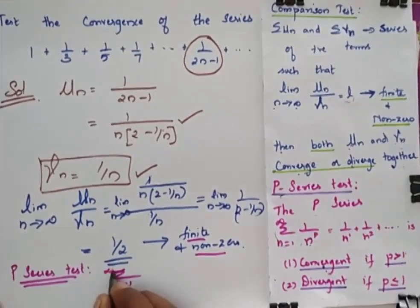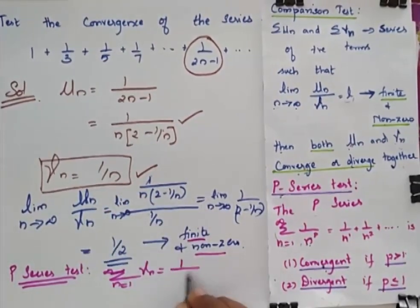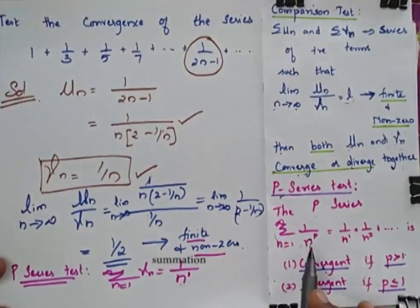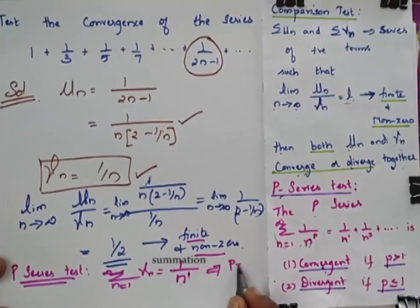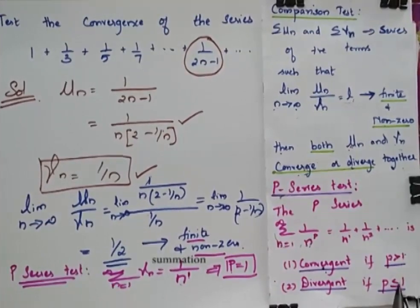For Vn, summation n ranging from 1 to infinity, 1 by n. So it is 1 by n. So this can be written as n power 1. So when I compare this with this, my P is equal to 1. So this implies that my P is equal to 1. So when my P is equal to 1 or less than or equal to 1, it is divergent.